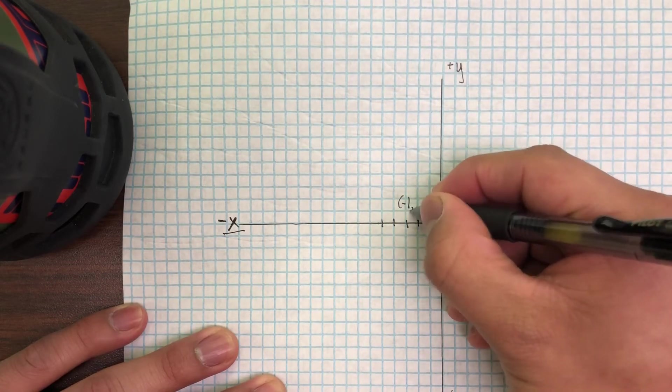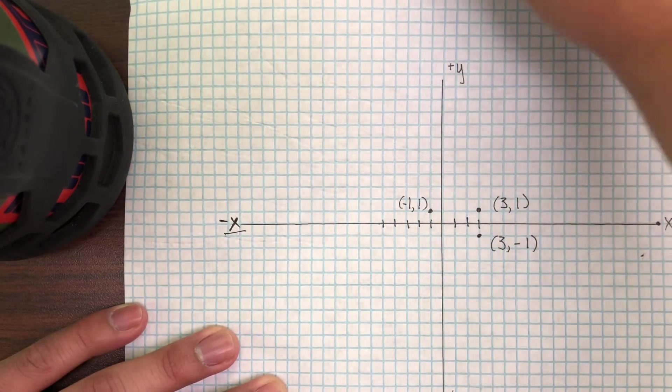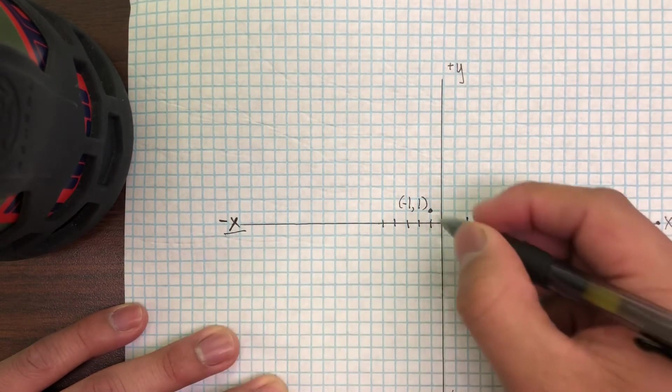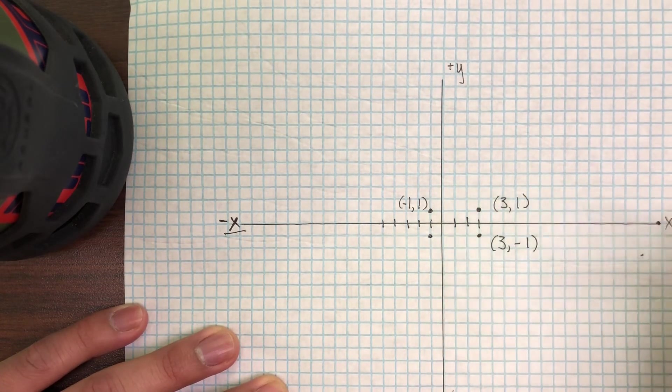And our final one is negative 1, negative 1. So again I go to the left because it's negative, and then I go down also because it's negative. And I've just graphed all the points.